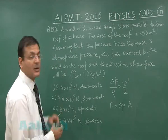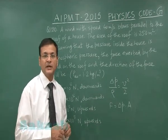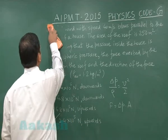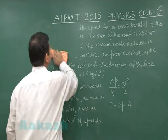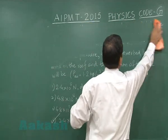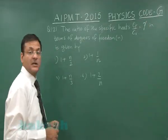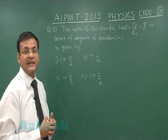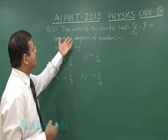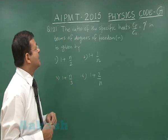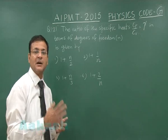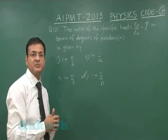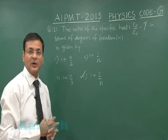Now question 121. This is based on direct formula from kinetic theory. The ratio of the specific heats γ in terms of degrees of freedom, this is a standard relation: γ equals 1 plus 2 by n. Nothing to think about it. You can mark simply option number 4 for question 121.